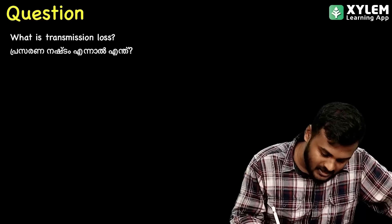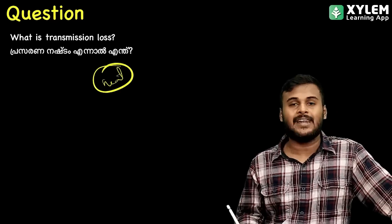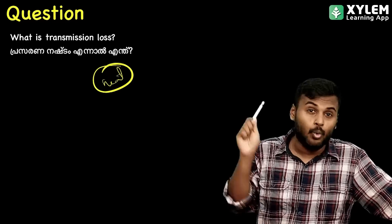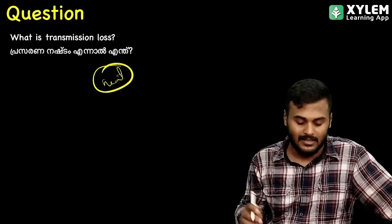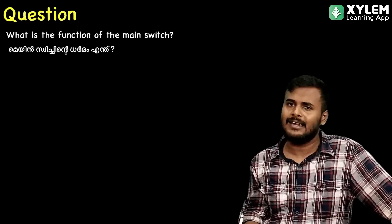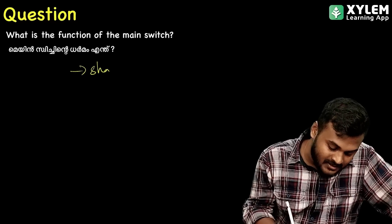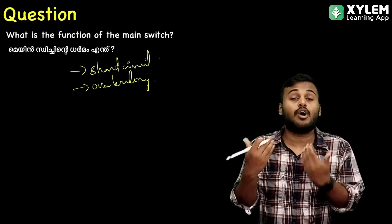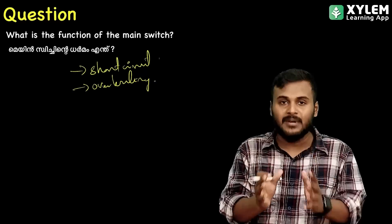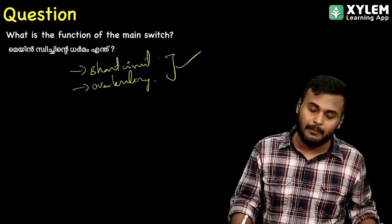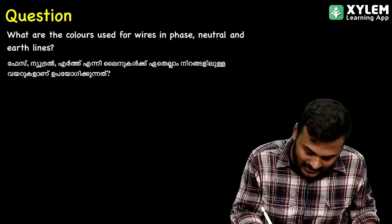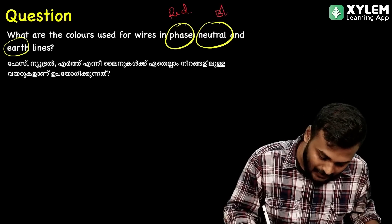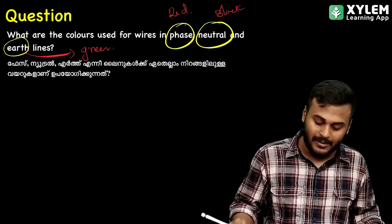What is transmission loss? What is transmission loss? It is the loss of energy in the form of heat. What is the function of main switch? We use the main switch for short circuit and overloading. What are the colors used for Phase, Neutral and Earth? The colors are: Phase is red, Neutral is black, Earth is green.